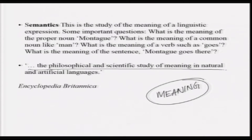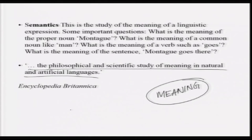Here is an encyclopedic definition from Encyclopedia Britannica: semantics is the philosophical and scientific study of meaning in natural and artificial languages. In our ordinary lives, we do some semantics — for example, when we talk about synonymy. Two phrases are synonymous when they have the same meaning, such as 'unmarried man' and 'bachelor'. Antonyms are opposed to each other as far as meanings are concerned.